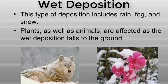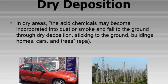Forms of acid deposition: wet deposition. Wet deposition is what we most commonly think of as acid rain. The sulfuric and nitric acids formed in the atmosphere fall to the ground mixed with rain, snow, fog, or hail.